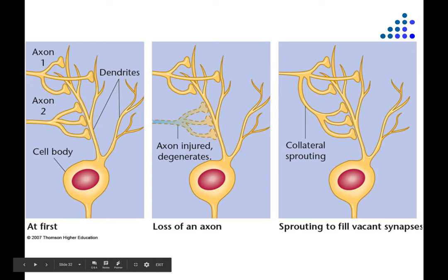In class we talked about how the brain develops early on. Now we're going to move on to talk about how the brain adapts after injury and also how it changes as a result of extensive practice in adulthood.